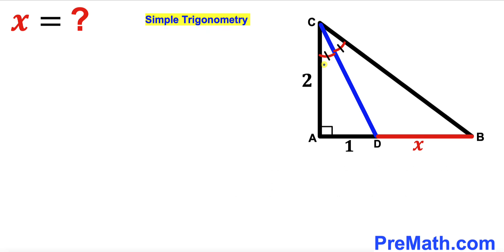Since we are dealing with these two congruent angles, I'm going to label angle ACD as theta. And likewise, angle BCD is going to be angle theta as well.